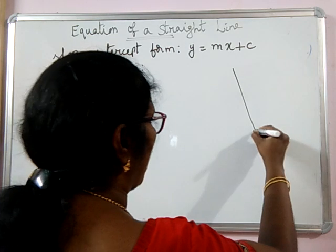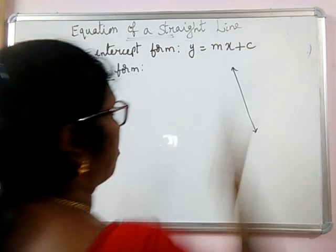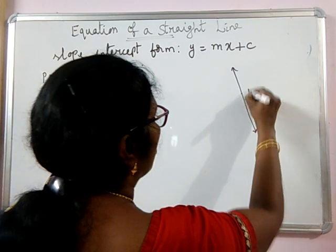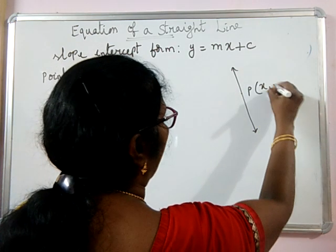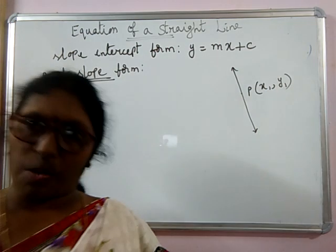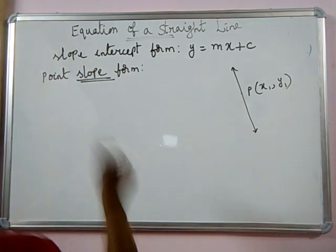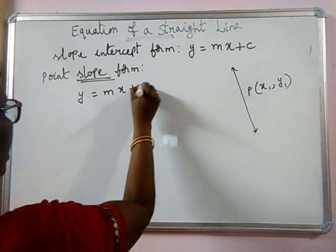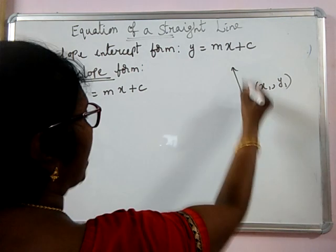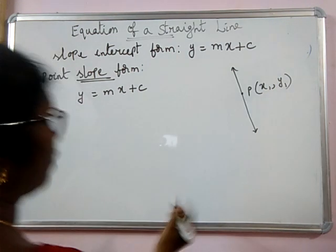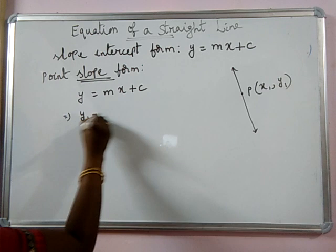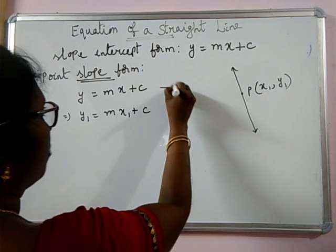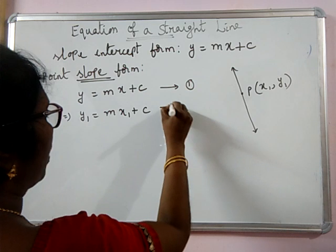Suppose this is a line whose slope is m, y-intercept is c, and this line is passing through the point P having coordinates (x₁, y₁). Then we know that y = mx + c. As that line is passing through (x₁, y₁), we can write y₁ = mx₁ + c. Let us state this as the first equation.